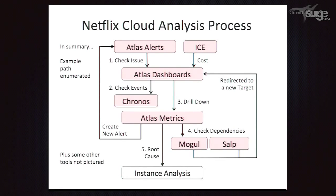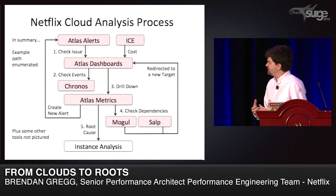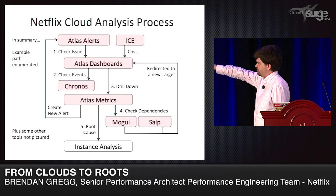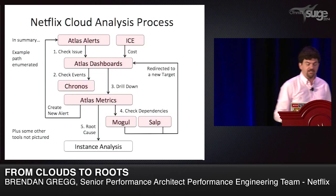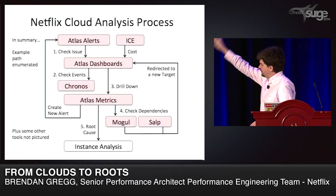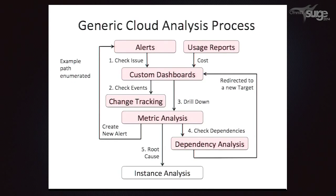So now the workflow makes more sense: start with Atlas alerts, go to dashboards, then Kronos gives an important clue about what changed recently, drill down into the Atlas metrics UI, check dependencies to possibly look at a different service team, rinse and repeat — until you need to go do root cause instance analysis. In generic terms: alerts, custom dashboards, change tracking, metric analysis. Your architecture may already have some or all of these.